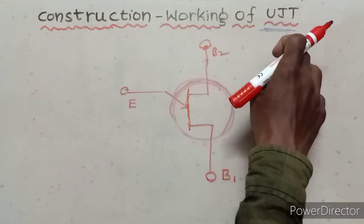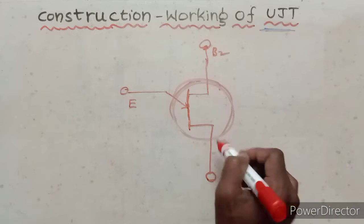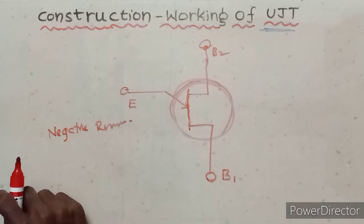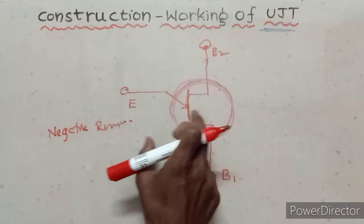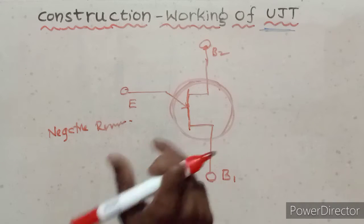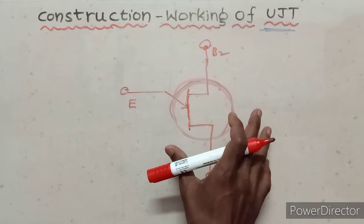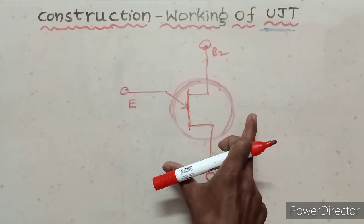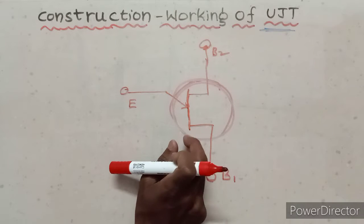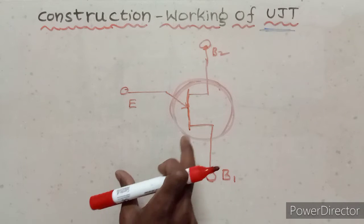UJT, also called the double base diode, exhibits negative resistance. It exhibits negative resistance characteristics which make it useful as an oscillator. The oscillator frequency can be easily varied, making it suitable for motor speed control applications.